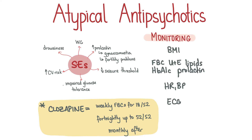Extrapyramidal side effects can be treated using procyclidine for dystonia, propranolol for restlessness, and tetrabenazine for tardive dyskinesia. Depot injections can be used in the long term if patients are at risk of non-compliance. Clozapine is used for treatment-resistant schizophrenia, which is when two antipsychotics have been trialled and given no benefit. If clozapine doesn't work either, then ECT is usually indicated. Antipsychotics should continue for at least two years after the initial presentation before gradually reducing the dose while monitoring closely.